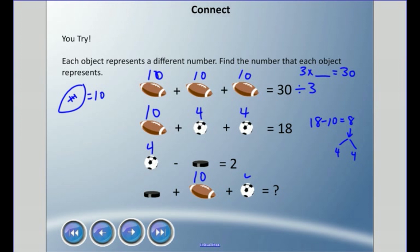Now I have a soccer ball minus a hockey puck which equals 2. So 4 minus something equals 2. Well 4 - 2 equals 2, so then I can put the puck there.